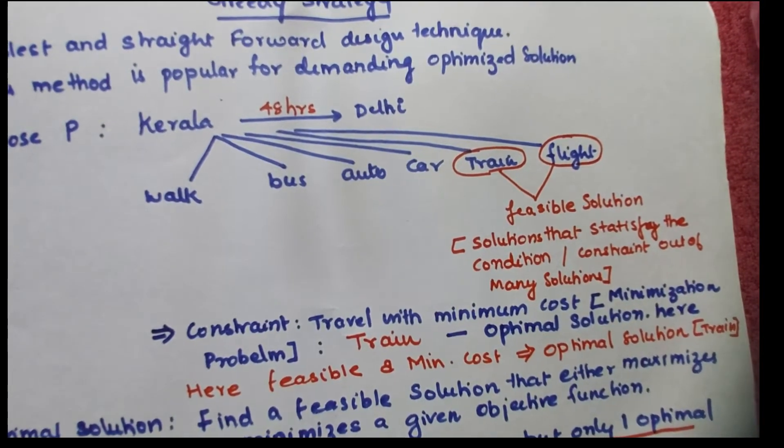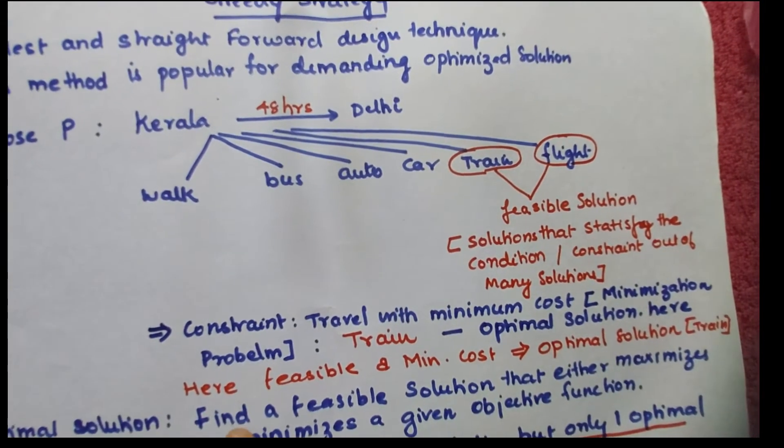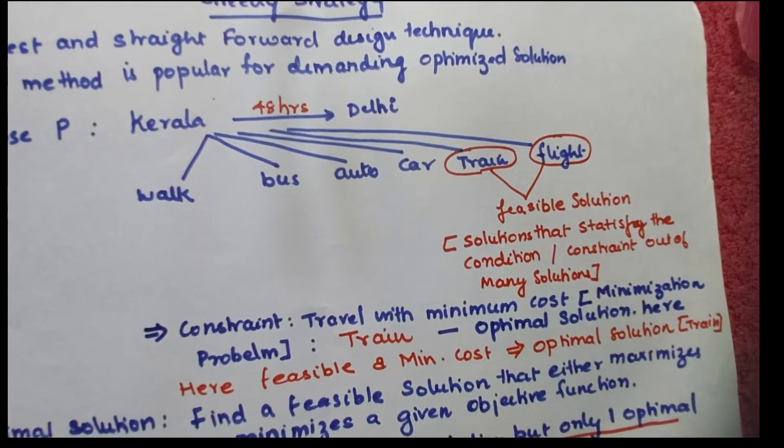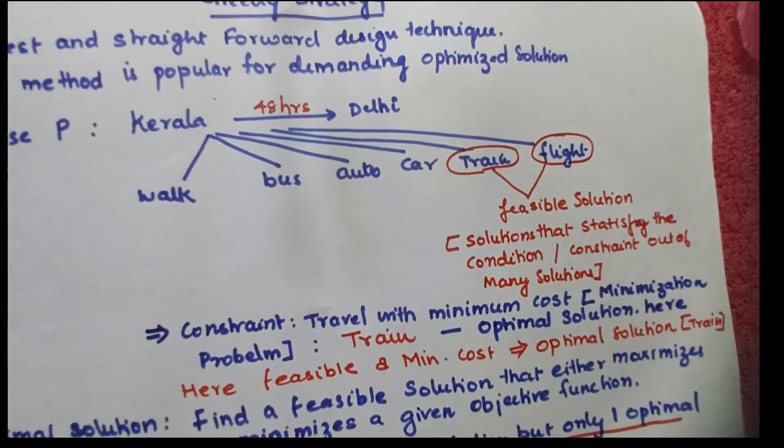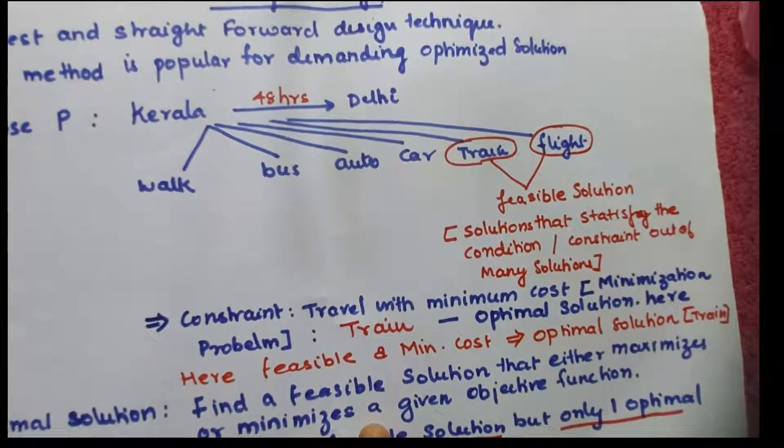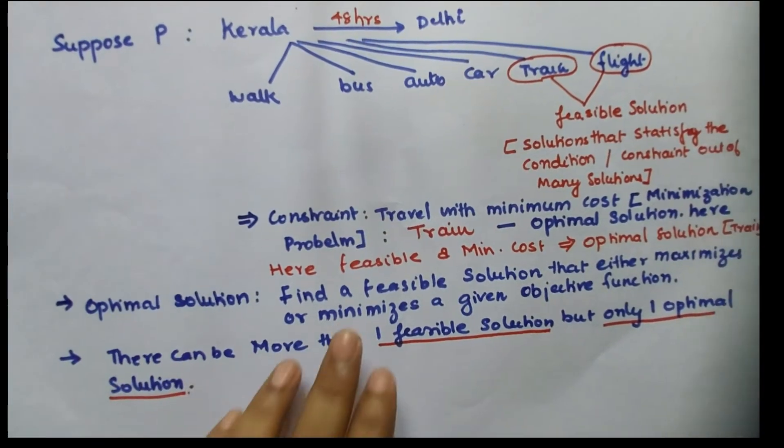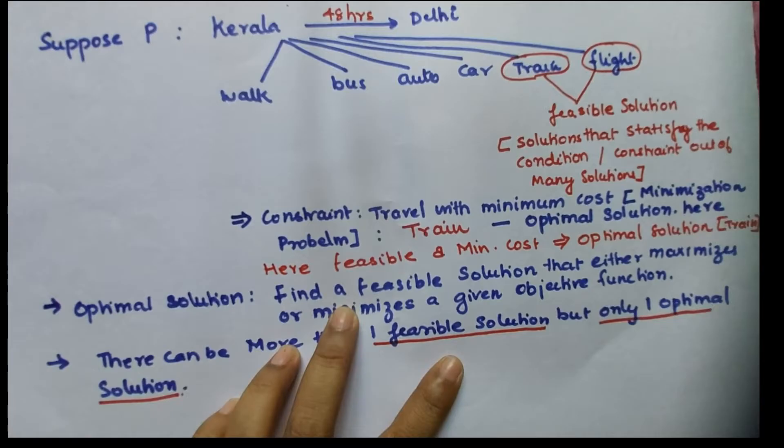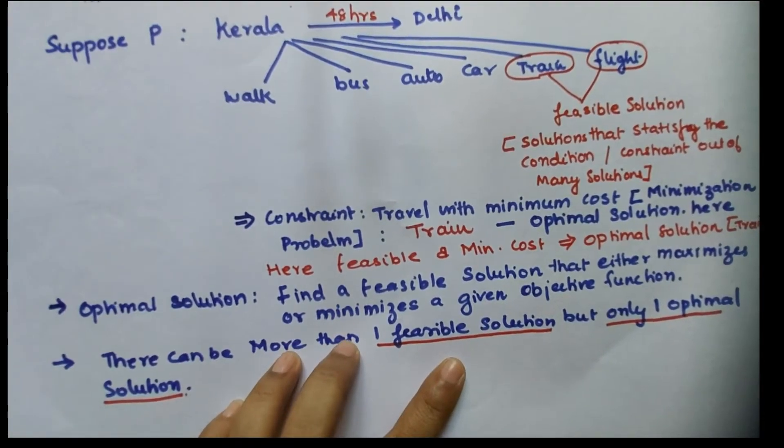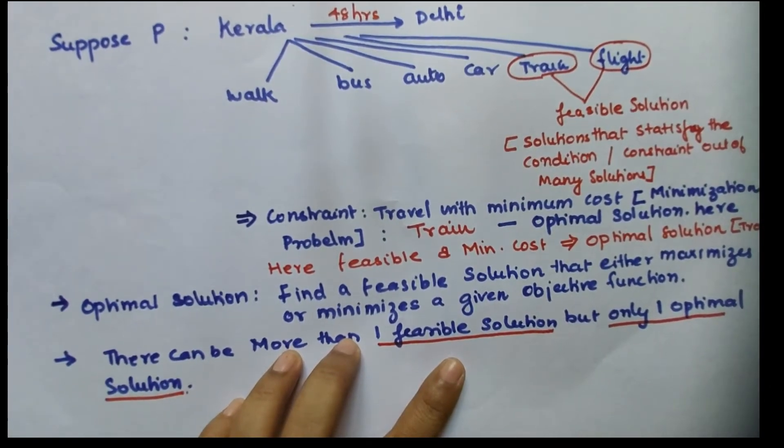What is optimal solution? Here, optimal solution will be feasible and minimum cost. So the optimal solution is traveling by train. Find a feasible solution that either maximizes or minimizes a given objective function.